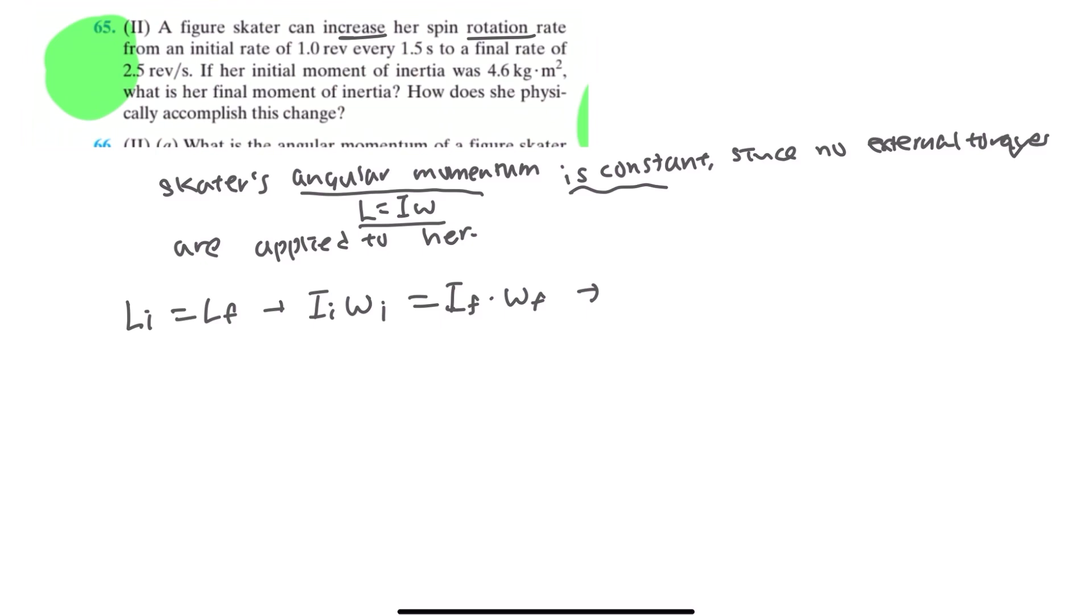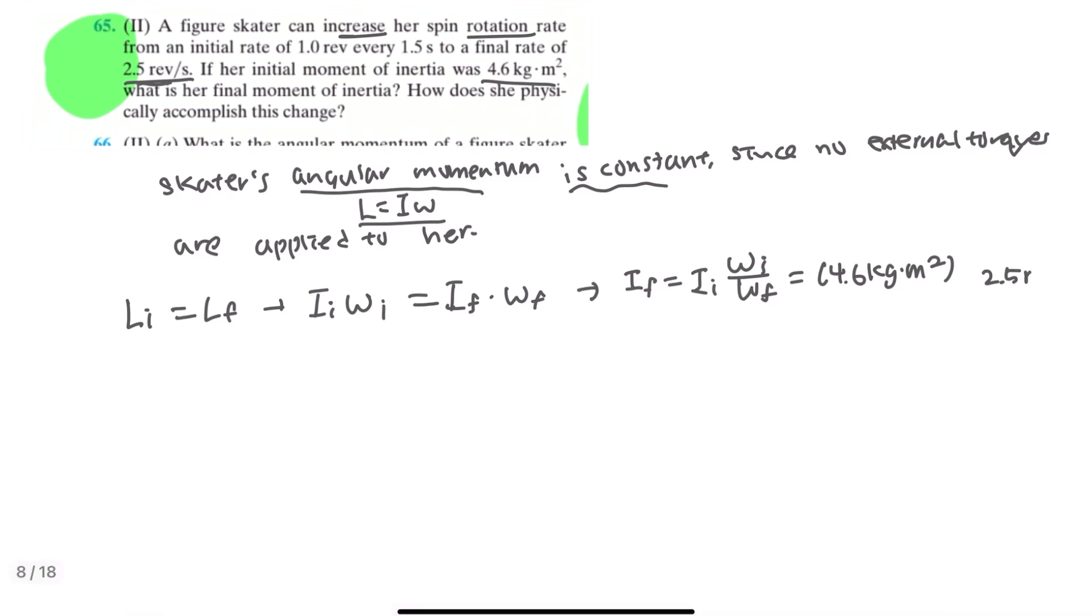And if we put this formula organized by having I final on the left side, it would be I final equals I initial omega initial over omega final. Now let's substitute these values into this formula: I initial being 4.6 kilograms meter squared, 2.5 revolution per second being the final, and 1.0 revolution per 1.5 seconds. If you put this value into your calculator and calculate it, the answer would be 1.2 kilograms per meter squared.